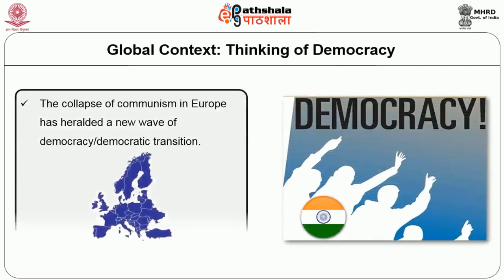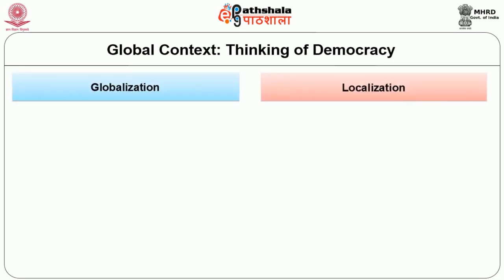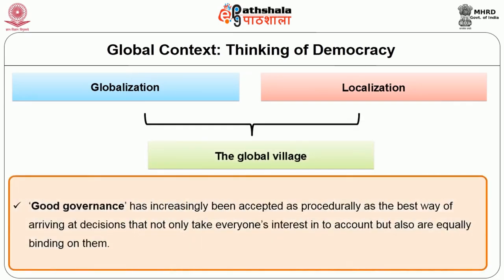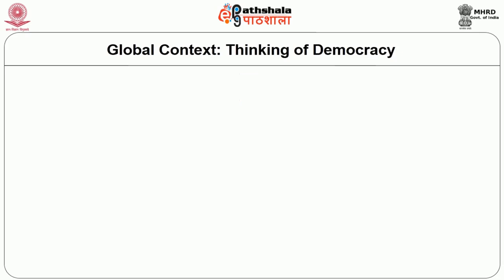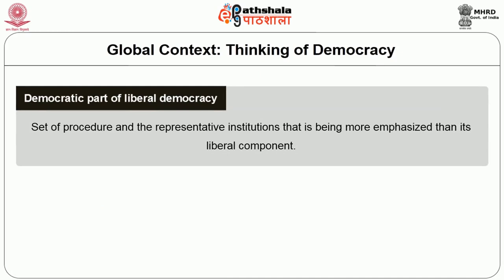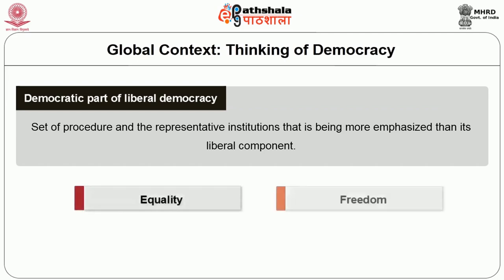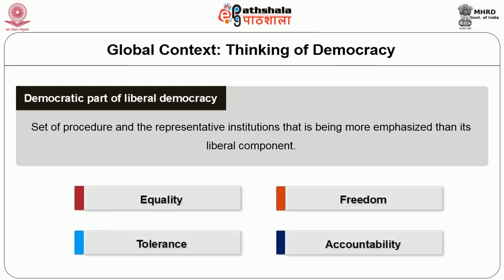Democracy has irreversibly entered the Indian political imagination and has even begun to corrode the authority of the social order. The collapse of communism in Europe heralded the third wave of democracy. With globalization, democracy as a form of good governance has increasingly been accepted — procedurally — as the best way of arriving at decisions that take everyone's interest into account and are equally binding on them. As a result, it is the democratic part of liberal democracy — the set of procedures and representative institutions — that is being more emphasized than its liberal component of equality, freedom, tolerance, and accountability.